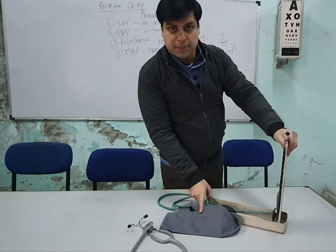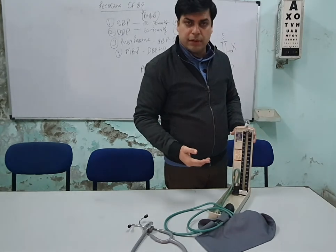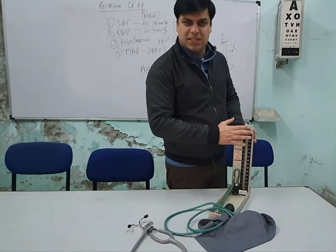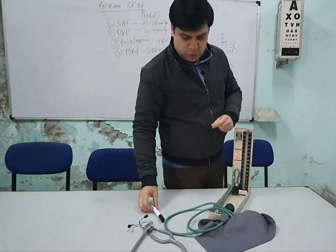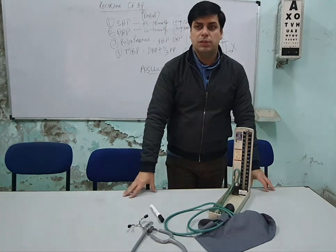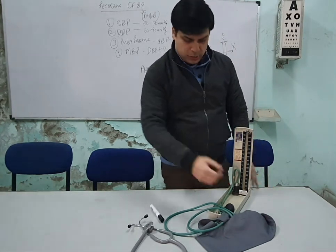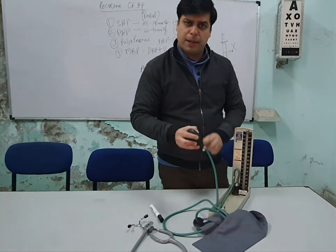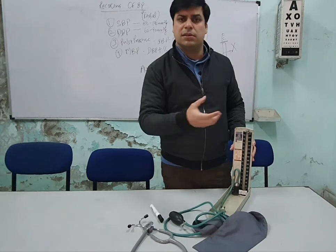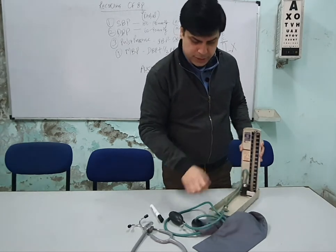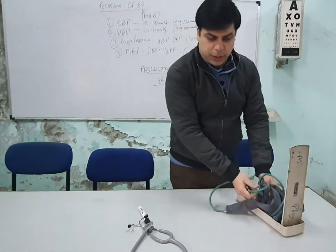An important note: the procedure demonstrated uses a mercury column sphygmomanometer, which is now obsolete due to environmental hazard concerns. In modern practice, analog (aneroid) sphygmomanometers are used instead, where the same inflate-deflate method applies but the reading is on an analog dial.